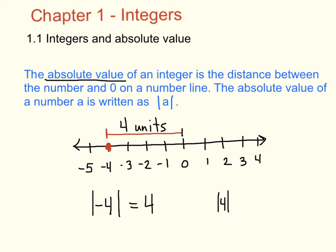And if we represent the absolute value of 4 with a blue dot, this is also 4 units away from 0. So the absolute value of 4 is also 4. Notice that the absolute value of any number, whether it's negative or positive, would be a positive integer.